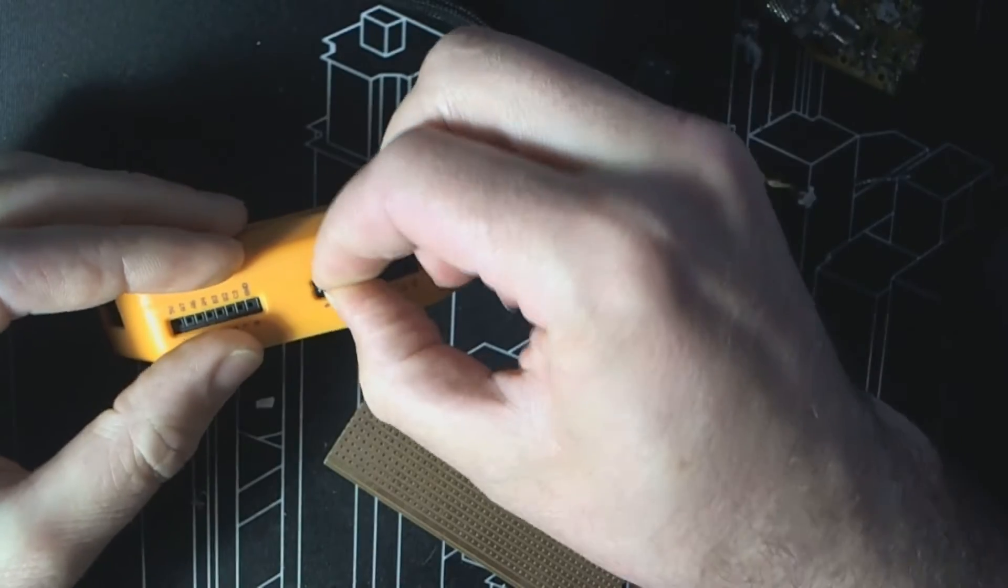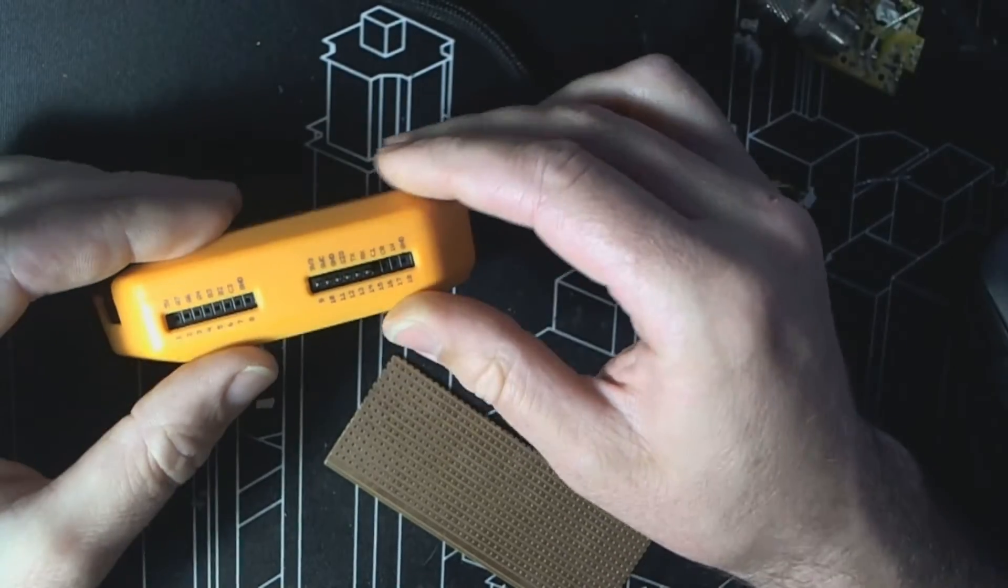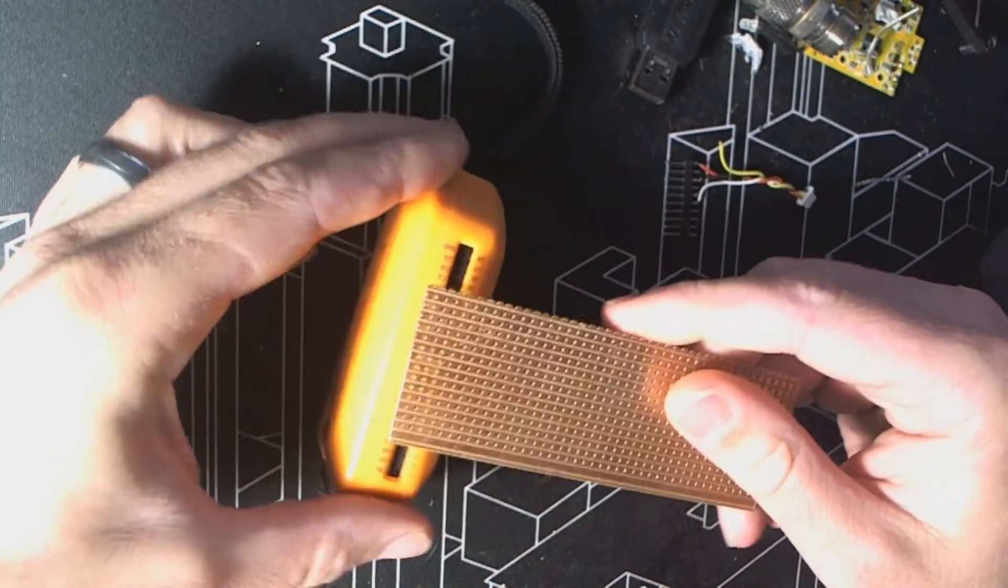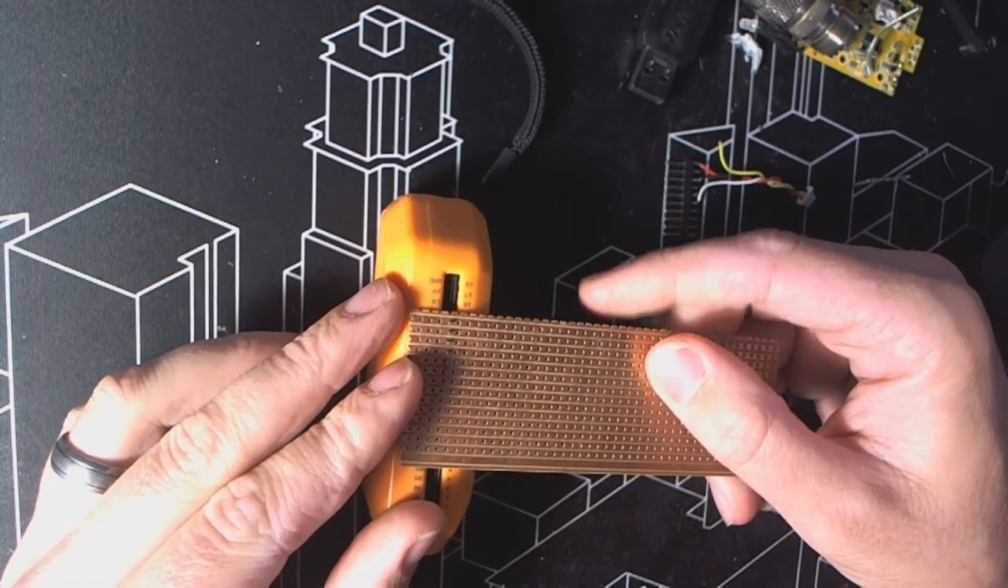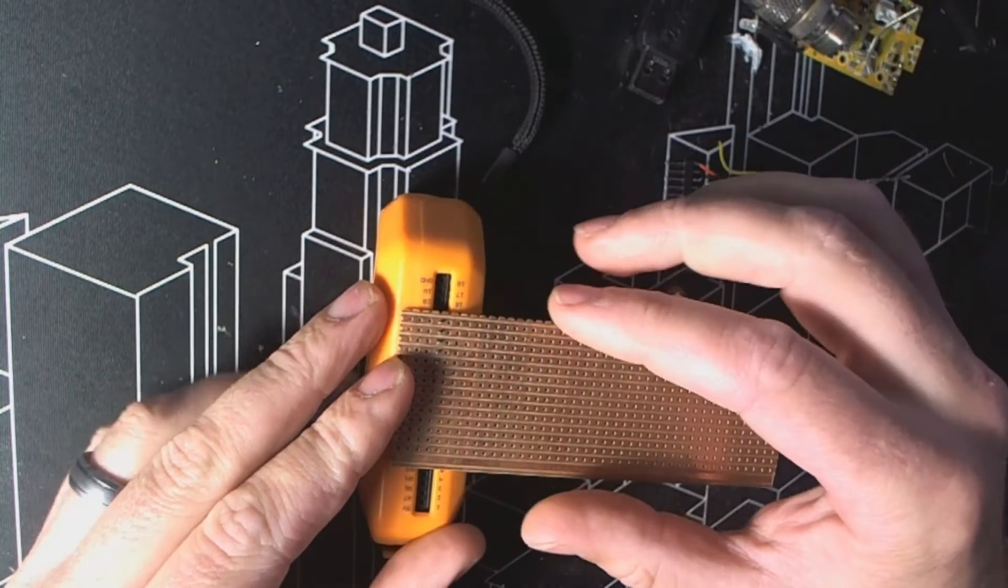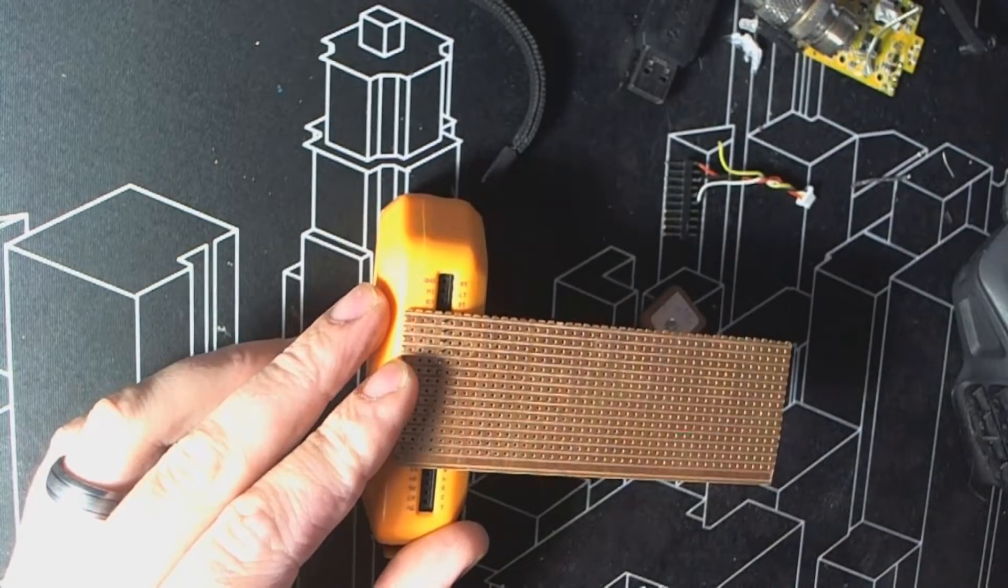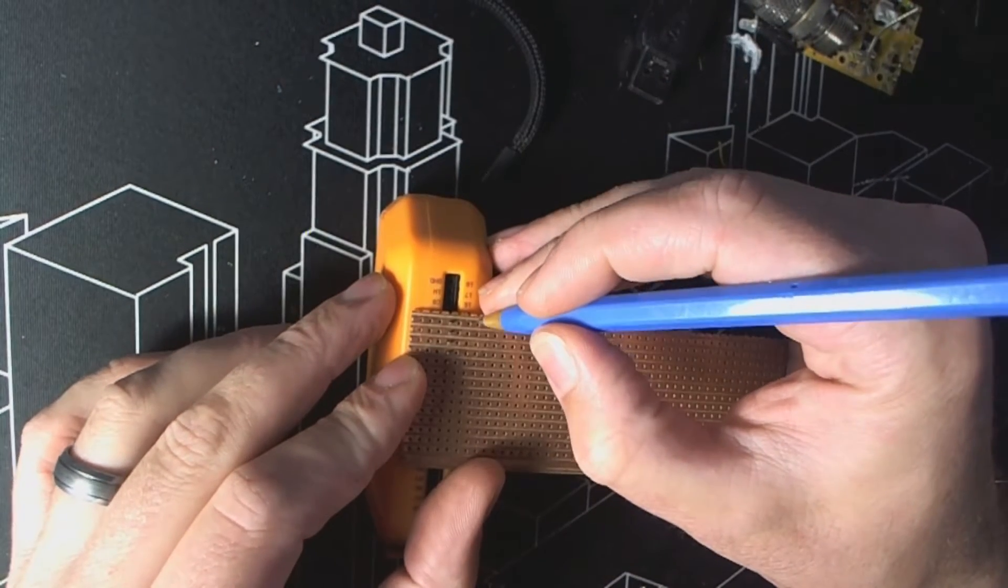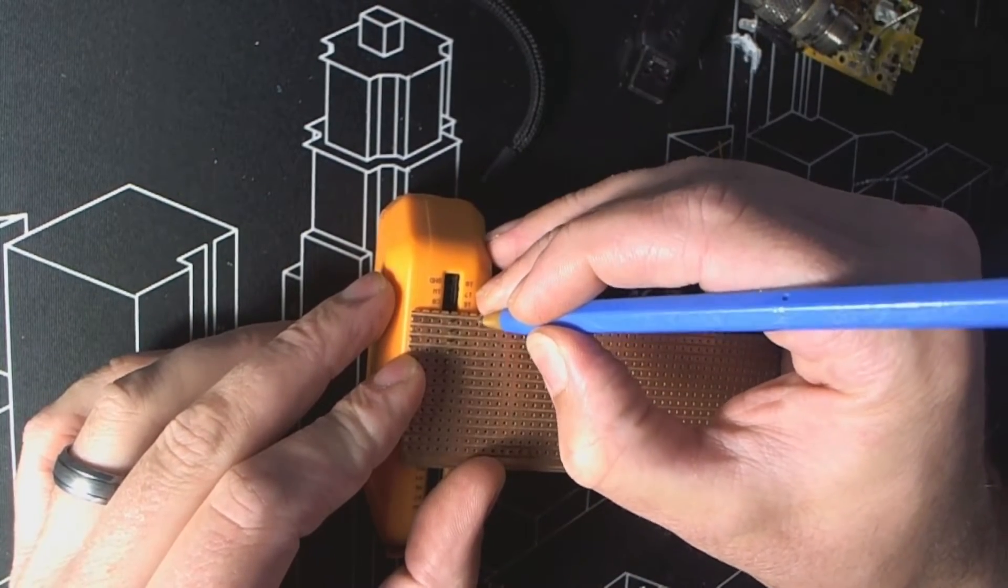We'll double check that, pushing that in there. And now our board here, a piece of Veraboard or proto board, we want to line it up and then mark where I want to cut it, which will be there.